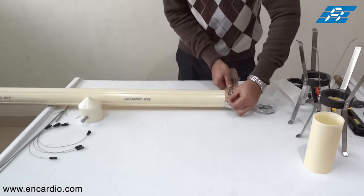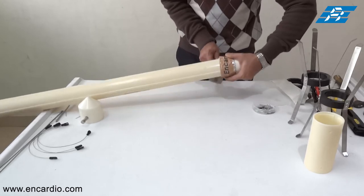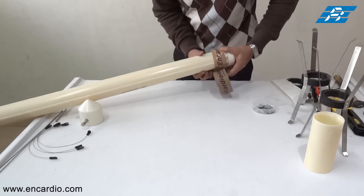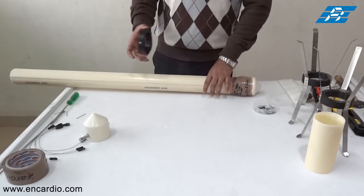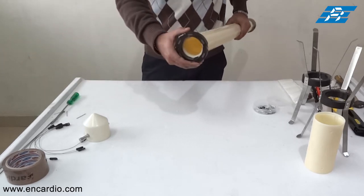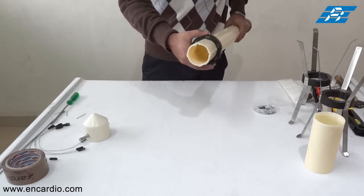And now to doubly seal it with the BOPP tape. Now the datum magnet is to be installed at half meter above the bottom cap.